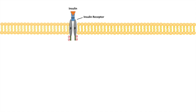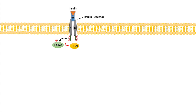Once the beta subunits become phosphorylated, they become activated. The beta subunits will then lead to the phosphorylation and activation of insulin receptor substrate, or IRS — IRS1 and IRS2 are the main isoforms. This is regulated by a protein known as PTEN, or phosphatase and tensin homolog deleted from chromosome 10, which is a protein tyrosine phosphatase that dephosphorylates and thereby negatively regulates IRS isoforms.